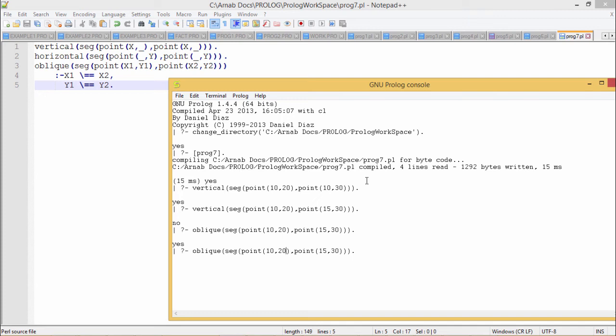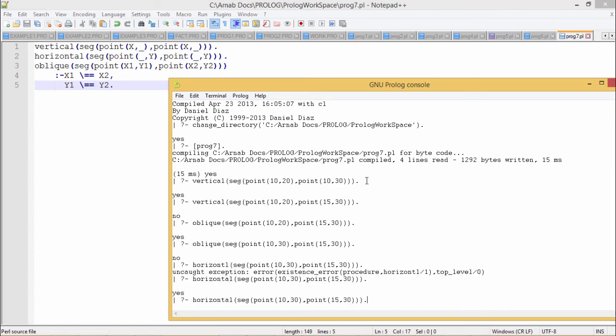Now if I make them both with the same y coordinates, that means y1 and y2 are same. This line is not oblique, but if you go for horizontal, I am getting the output as yes.